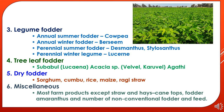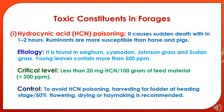Legume fodder also includes perennial winter legumes like lucerne. The fourth category is tree leaf fodder like Subabool (Leucaena leucocephala), Vavval, Karuvel, and Agathi. The fifth category is dry fodder like sorghum, bajra, rice, maize, ragi, and oat straw. The sixth miscellaneous category includes farm products except silage and hay, cane tops, fodder amaranthus, and a number of non-conventional fodders and feed crops.